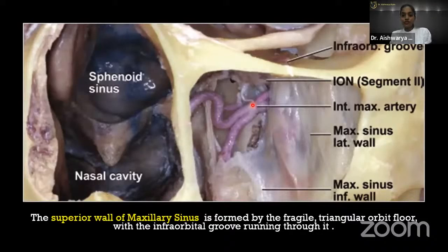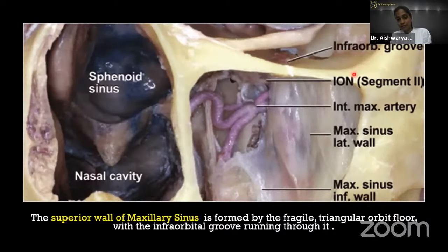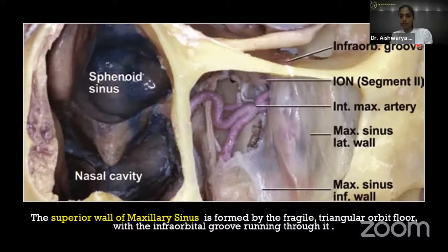The posterior wall is formed by the infratemporal surface of the maxilla and forms the anterior border of the pterygopalatine fossa. The superior wall of the maxillary sinus is formed by the triangular orbital floor. This includes the infraorbital groove and the infraorbital artery. The lateral wall of the maxillary sinus can also be seen in this region.